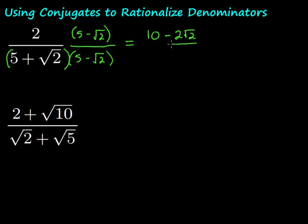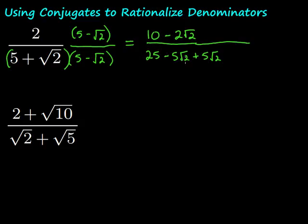On the bottom — and this is where conjugates are really cool — watch what happens. We're going to FOIL. So 5 times 5 is 25. Then we have 5 times negative square root of 2, which is negative 5 square root of 2. Then we have square root of 2 times 5, so that's plus 5 square root of 2. Those are opposites of each other, so they cancel out. But we also have square root of 2 times negative square root of 2, which is negative square root of 4, and that's just negative 2.